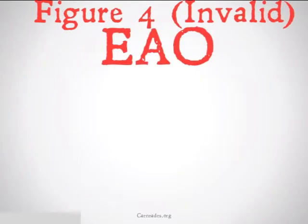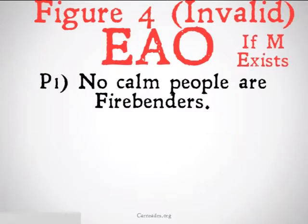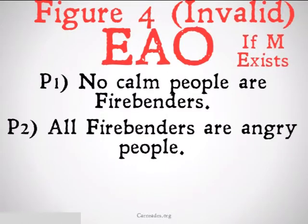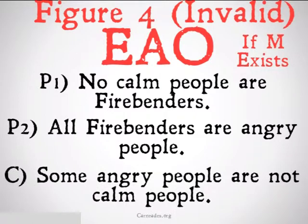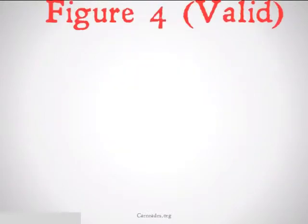Figure 4 invalid EAO — this is going to be a case where M doesn't exist. No calm people are firebenders. All firebenders are angry people. Therefore, some angry people are not calm people. Firebenders don't actually exist — that's our middle term — so it's not going to be valid, even though calm and angry people do.